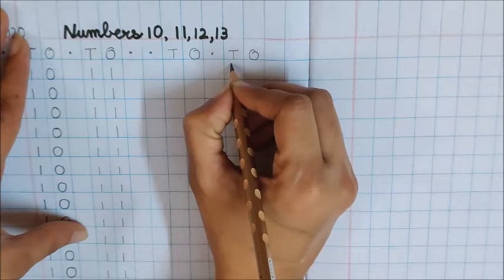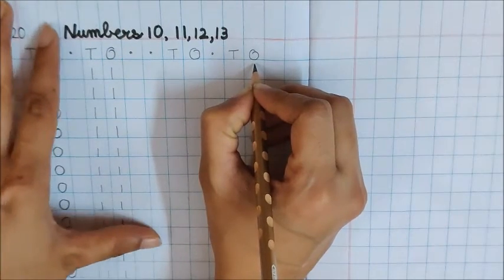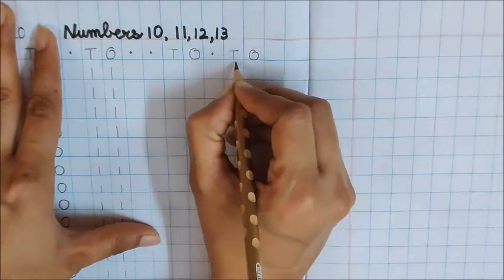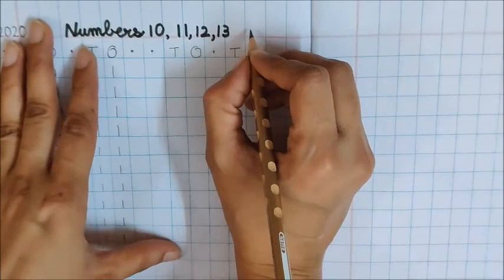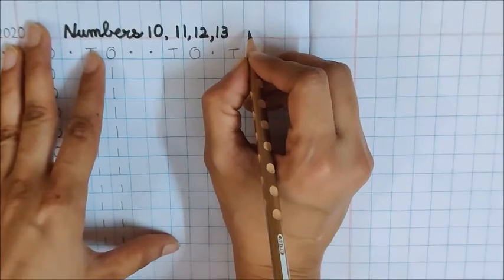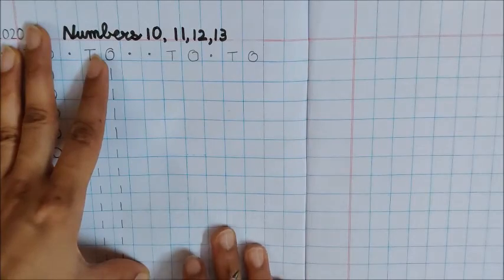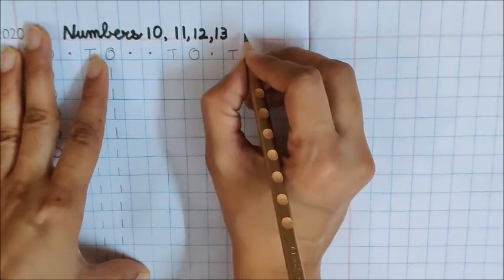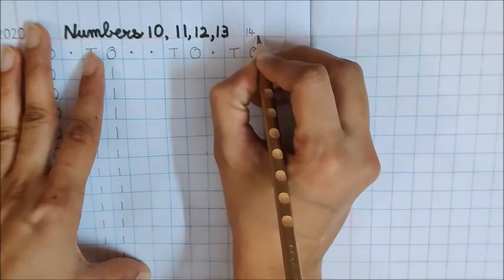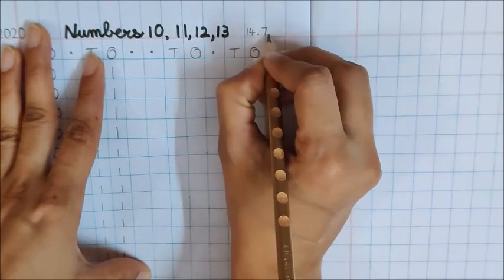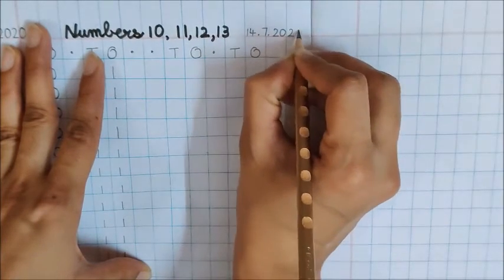T means 10's house and O means 1's house. And children, above this T-O, write down tomorrow's date because tomorrow we have our maths life class and we will do our work on this page. So write down the date of our life class. 14 dot 7 dot 2020.